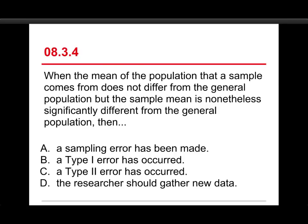Alright, number four. When the mean of the population that a sample comes from does not differ from the general population, but the sample mean is nonetheless significantly different from the general population, then: A, a sampling error has been made, B, a Type I error has occurred, C, a Type II error has occurred, or D, the researcher should gather new data.